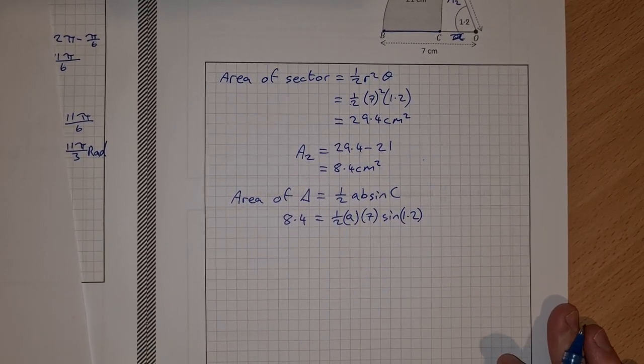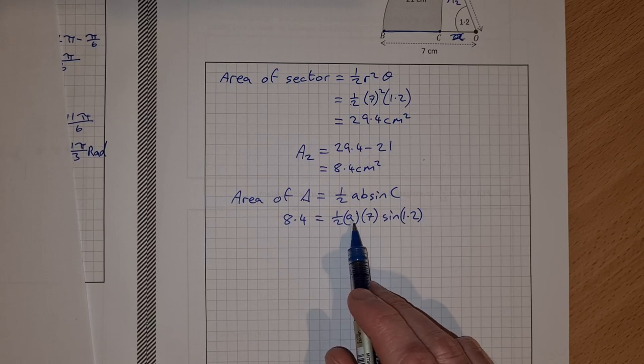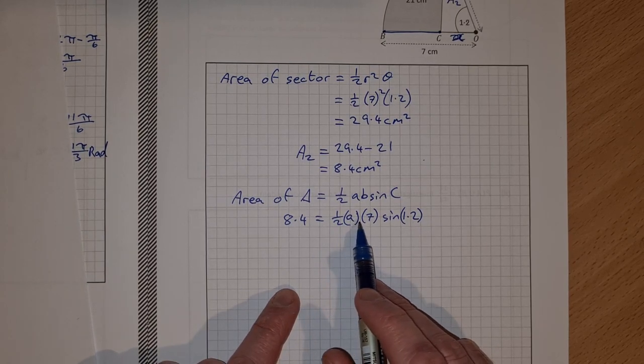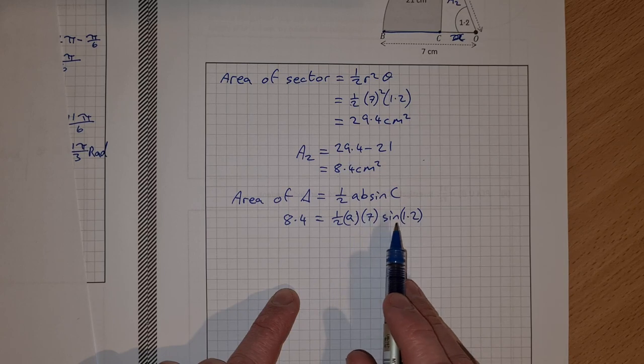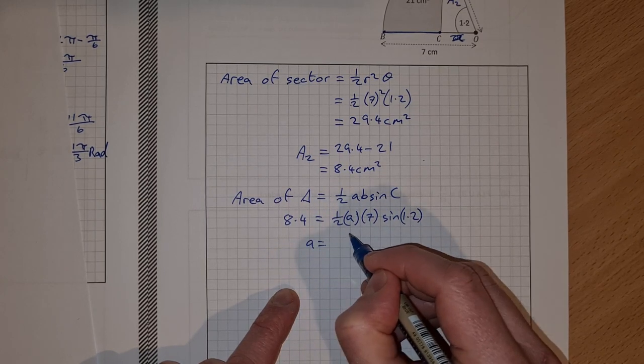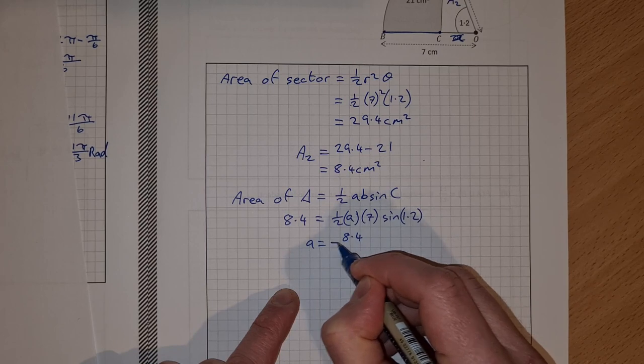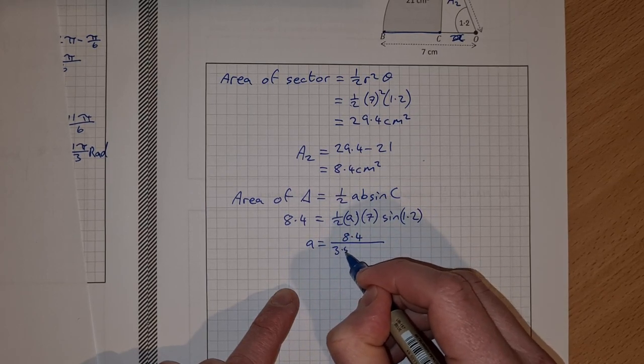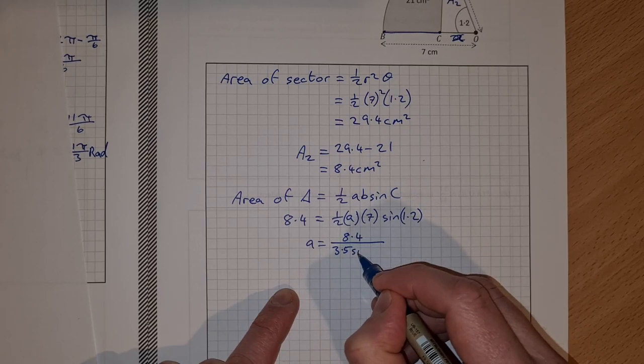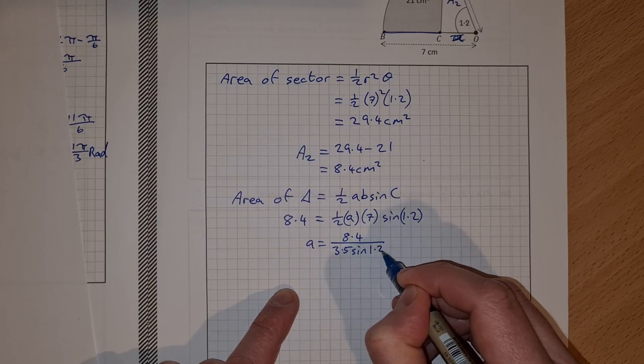So then to find A, to isolate A on its own, I can divide 8.4 by half times 7 times sine 1.2. So A is equal to 8.4 divided by half by 7 is 3.5, and then sine 1.2.